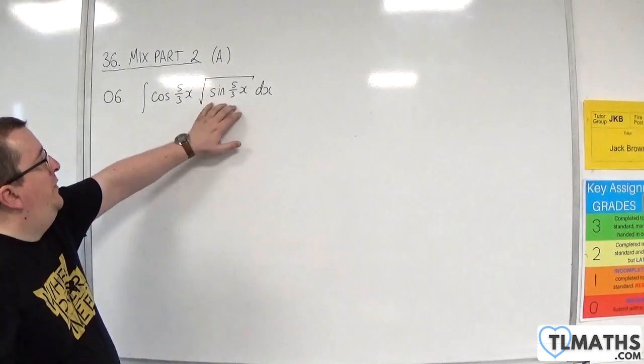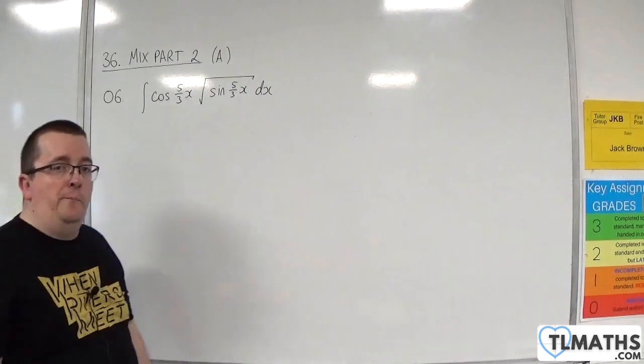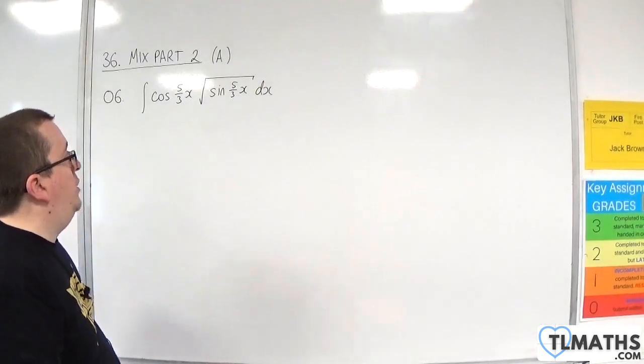So you would use u is equal to sine of 5 thirds x. Alternatively, you can do this by reversing the chain rule. So I'm going to do this by reversing the chain rule.